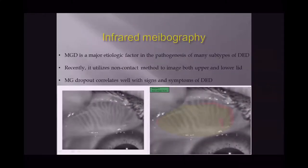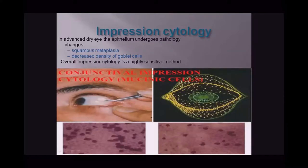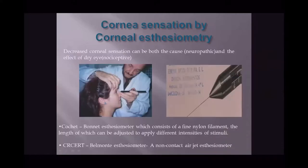Meibomian gland disease is a major etiological factor in dry eye pathogenesis. Infrared meibography uses a non-contact method to image both upper and lower eyelids; meibomian gland dropout correlates well with signs and symptoms. In impression cytology, advanced dry eye causes squamous metaplasia and decreased goblet cell density; it is a highly sensitive method but requires expert experience. Corneal sensation, which can be both a cause and effect of dry eye, can be assessed by contact or non-contact air-jet esthesiometry.